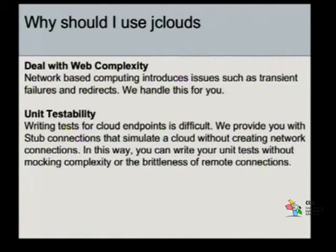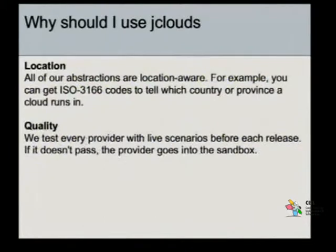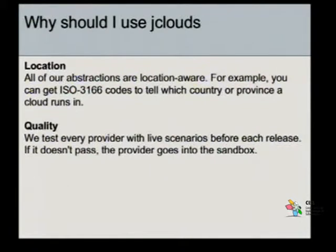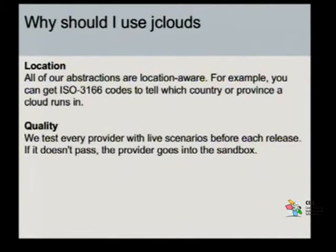Eles proveem essa funcionalidade para facilitar a construção de testes para aplicações em nuvem. Você não precisa fazer mocking da complexidade e nem precisa lidar com conexões remotas. Além disso, as abstrações disponibilizadas por essa API são location aware, ou seja, elas têm consciência da localização de onde estão sendo executadas. Você pode pegar os códigos de países onde a nuvem está rodando. Esse ISO 3166 é basicamente uma lista de códigos relacionados aos países do mundo inteiro. O Brasil, se eu não me engano, é 76. E com isso você consegue identificar onde é que o código está sendo executado.